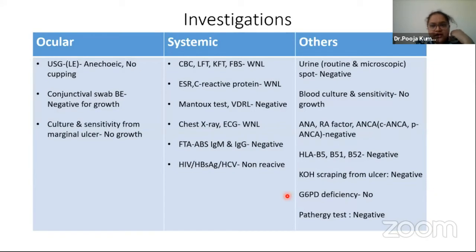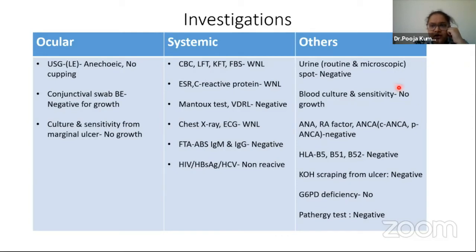We sent investigations to dermatology and rheumatology, who advised a full workup. Ultrasound was normal. Conjunctival swabs for microbiology — gram staining and fungal culture — were all normal with no organisms seen. Systemic investigations were largely normal. Chest X-ray was normal. Syphilis investigations were normal and viral serology markers were non-reactive. ANA, RA factor, and ANCA were negative, and HLA profile was also negative.